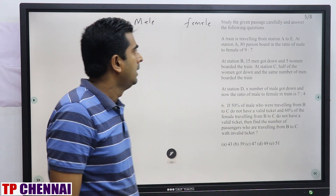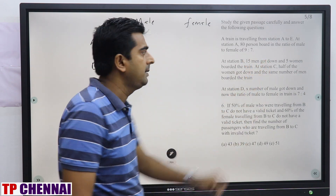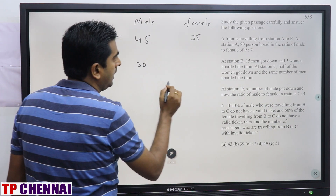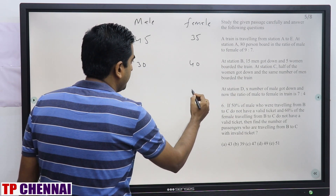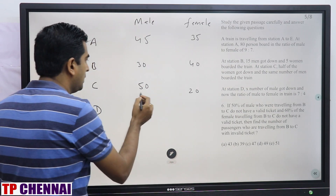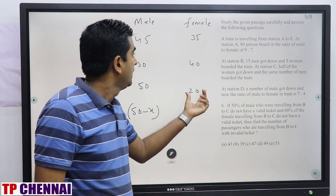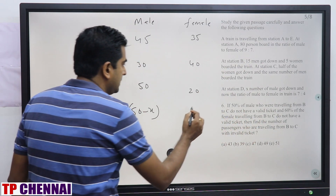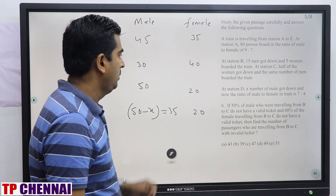For this case-rate DI, once you read it, follow step by step. At station A: 80 persons, ratio 9:7 → 16 parts = 80 → one part = 5 → males = 45, females = 35. At station B: 15 men got down → males = 30; 5 women boarded → females = 40. At station C: half the women got down → females = 20; same number of men boarded → males = 50. At station D: X males got down → males = 50 - X. Ratio 7:4 → 4 parts = 20 → females = 20, so males = 35.